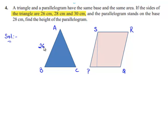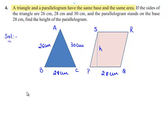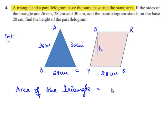Let AB be 26 cm, BC be 28 cm, and AC be 30 cm. Also given that the parallelogram stands on the base 28 cm, and let the height of the parallelogram be H, which we have to find. The condition given in the question is: area of the triangle is equal to the area of the parallelogram.